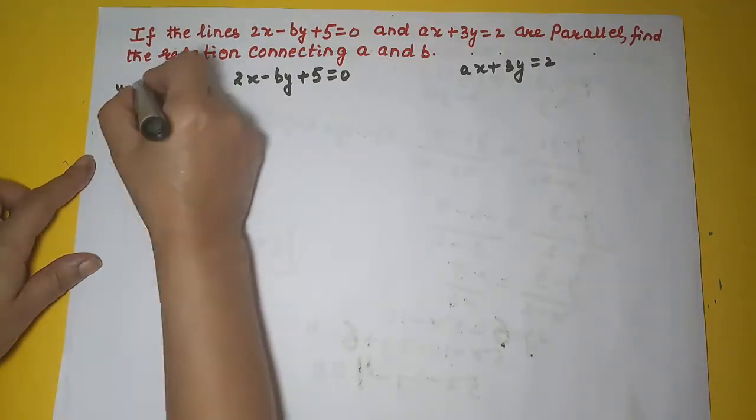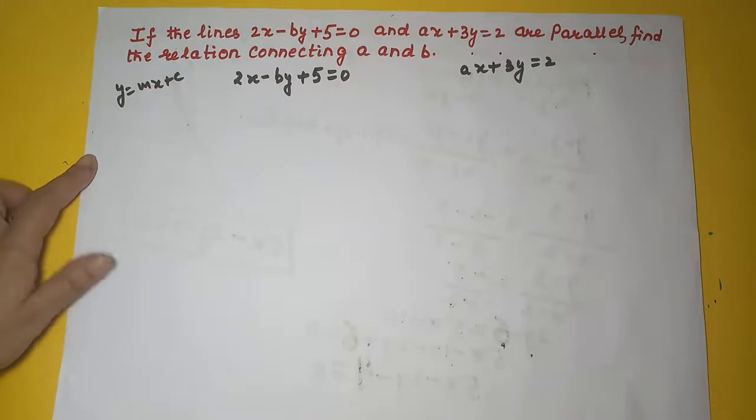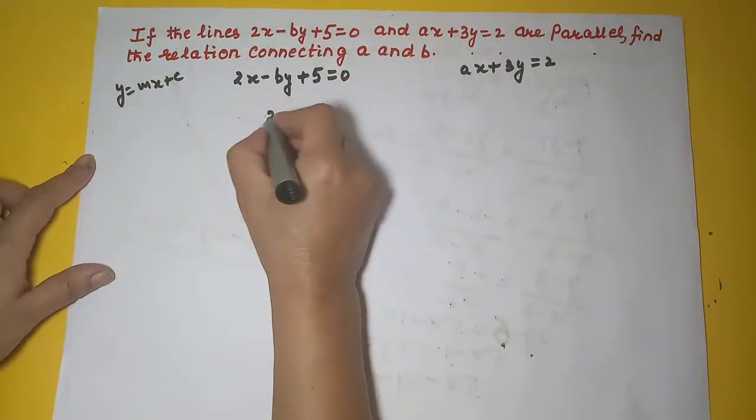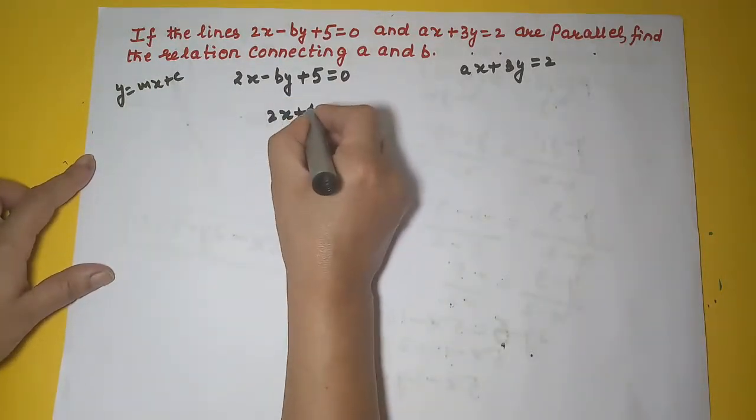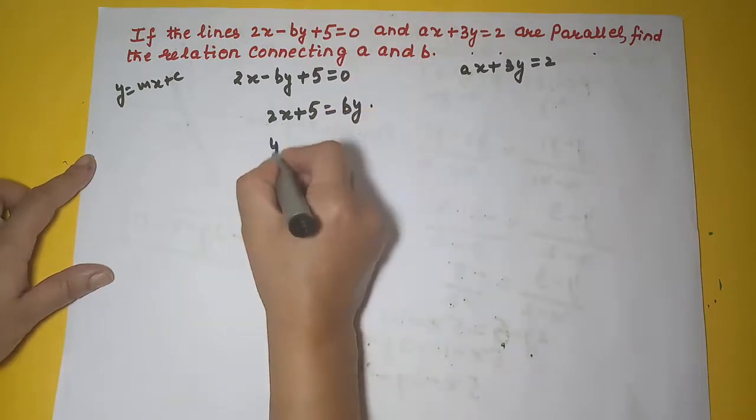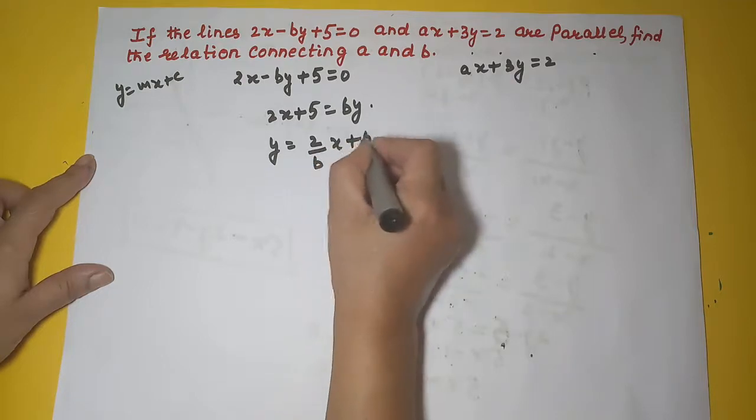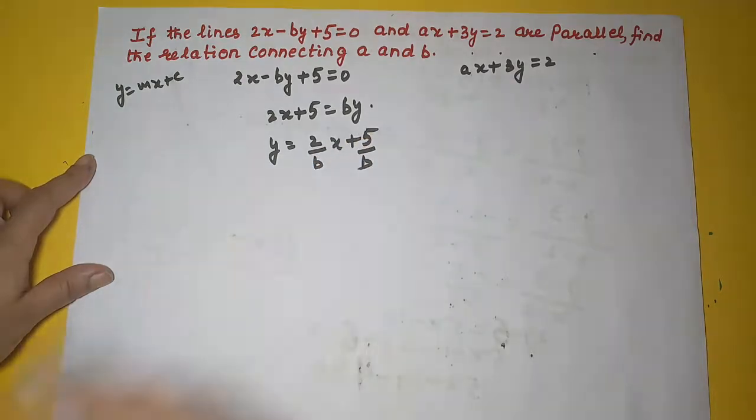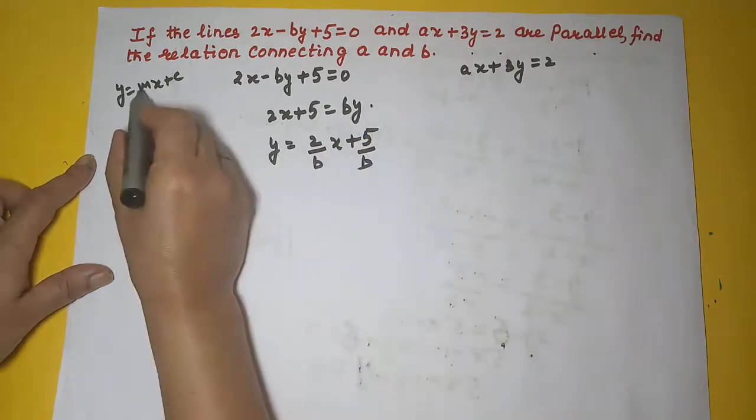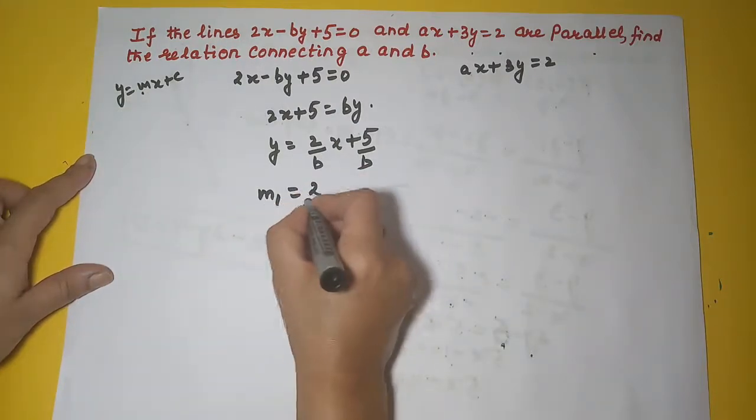Let's convert this into the standard form to calculate the slope. So this will become 2x plus 5, this by we will shift here. Then we will have y as 2 upon bx plus 5 upon b. What is the coefficient of x? That is the slope. So here m1 is equal to 2 upon b.